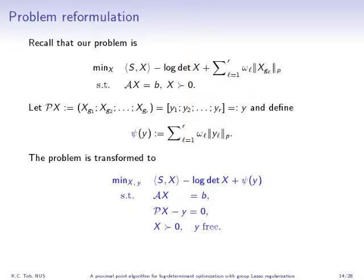With these two ingredients I can design a PPA for our problems. The problem is minimizing the negative log likelihood function plus group lasso regularization, subject to equality constraints Ax equal to B, and X positive definite. I define the operator P(X) to extract all the elements of X in different groups, assigning them to variables Y1, Y2, and so on as a vector Y. With this new variable Y, the objective function becomes psi(Y) equal to the sum of wL times the p-norm of YL, and the problem is transformed with the additional constraint P(X) minus Y equal to zero.